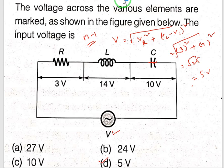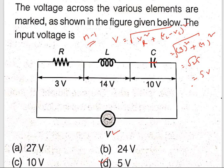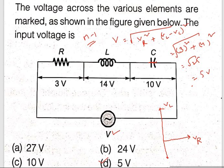Now let us see this question theoretically or conceptually. VR equals 3 volts is given. Inductor voltage is leading and capacitor voltage is lagging — that is VC. Capacitor voltage is VC.